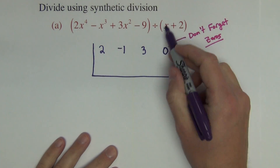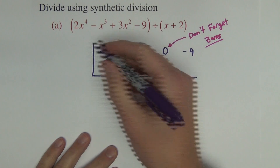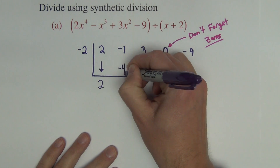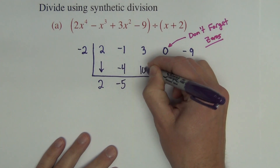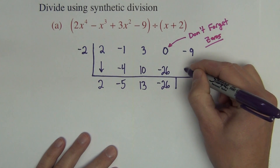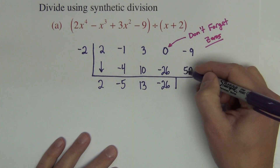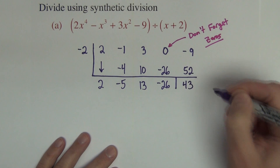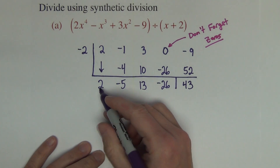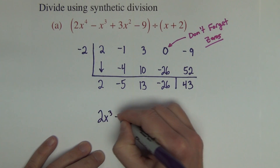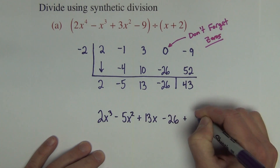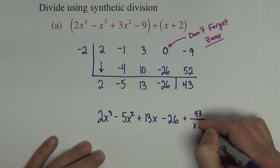On the outside we use the zero of the factor, so we use negative 2 rather than positive 2. We bring down the first term, then multiply, add, multiply, add, multiply, add, multiply, add, and one more time add, getting 43 as the remainder. Putting the x's back in and decreasing the power by 1, the result is 2x cubed minus 5x squared plus 13x minus 26, plus remainder 43 divided by x plus 2.